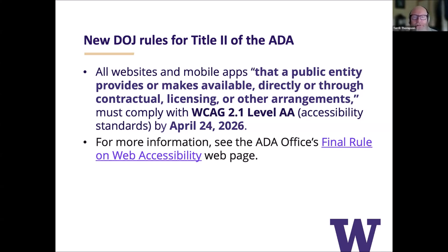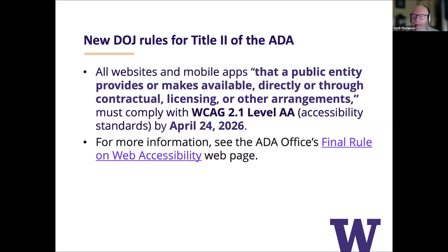That language speaks to the need for accessibility to be addressed in procurement, because it's not just stuff that we are building — it's stuff that we are buying. If it's a website or a mobile app and we're relying on a third-party vendor, then it needs to be accessible. The new rule establishes WCAG 2.1 Level AA as the standard, and we have a deadline: April 24th, 2026 is the date by which most of our websites and mobile apps need to be compliant. So we've got a little less than two years to actively pursue this with both the things we build and the things we buy.